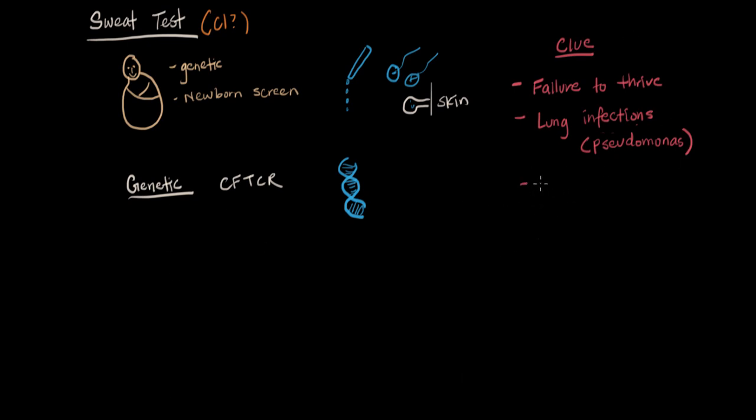Of course there's malnutrition. Because they can eat all the food in the world, but if CF stops their pancreas from helping them digest it, then they will have malnutrition.